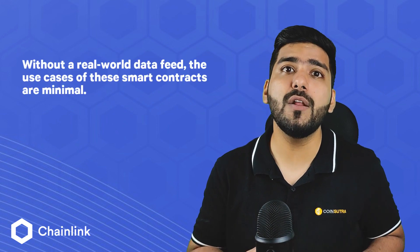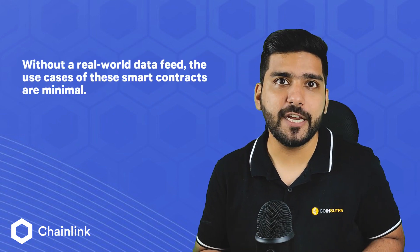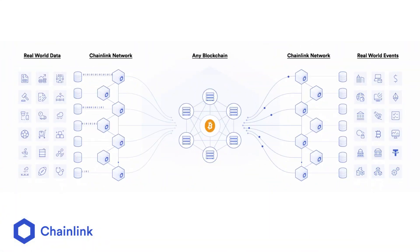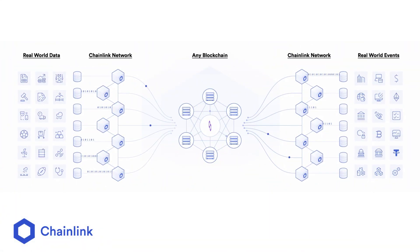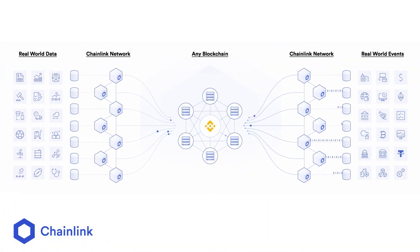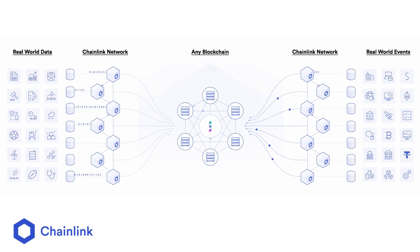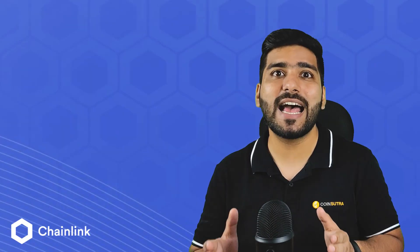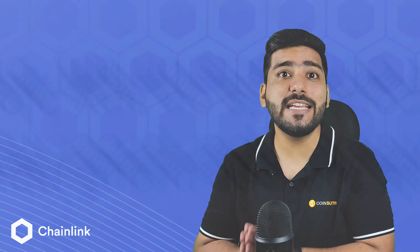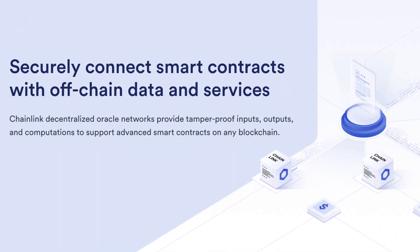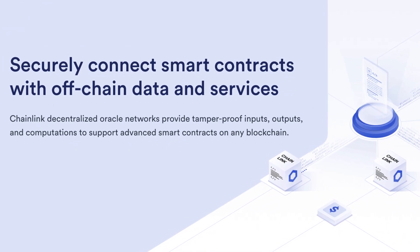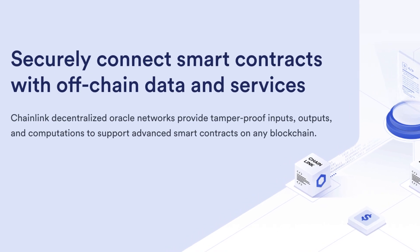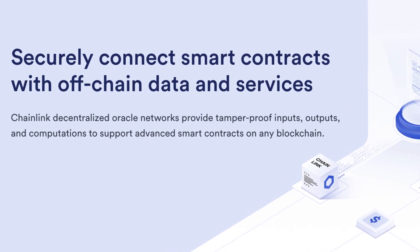Therefore, without a real-world data feed, the use cases of these smart contracts are minimal. So to maintain the utility and security of smart contracts, we needed a decentralized off-chain data provider, also known as an oracle. Chainlink is a decentralized oracle network that enables smart contracts to interact with real-world data and services outside the blockchain network.